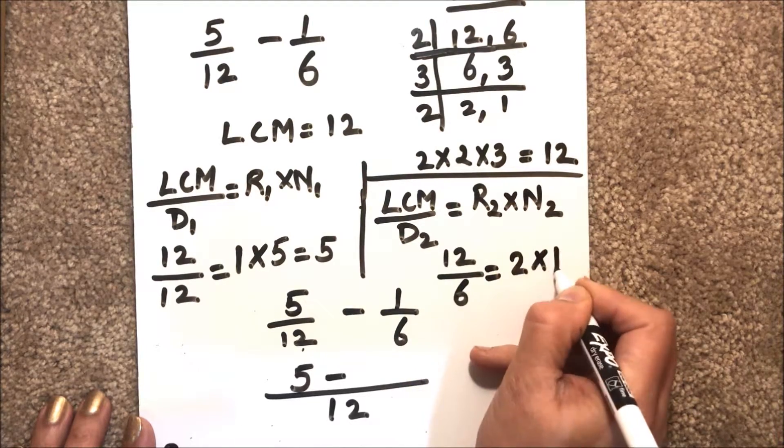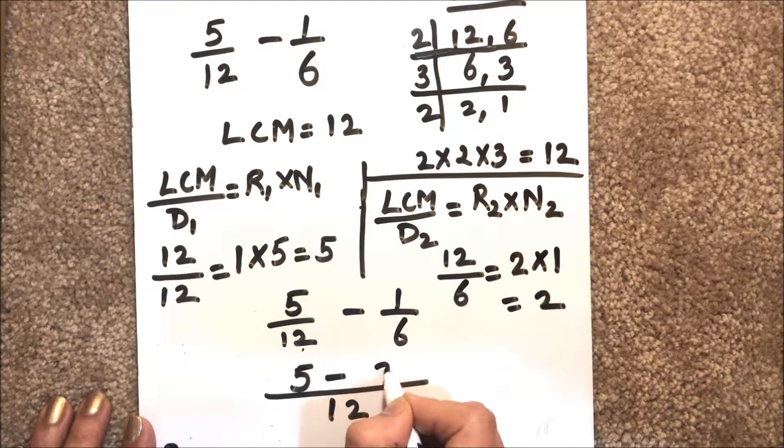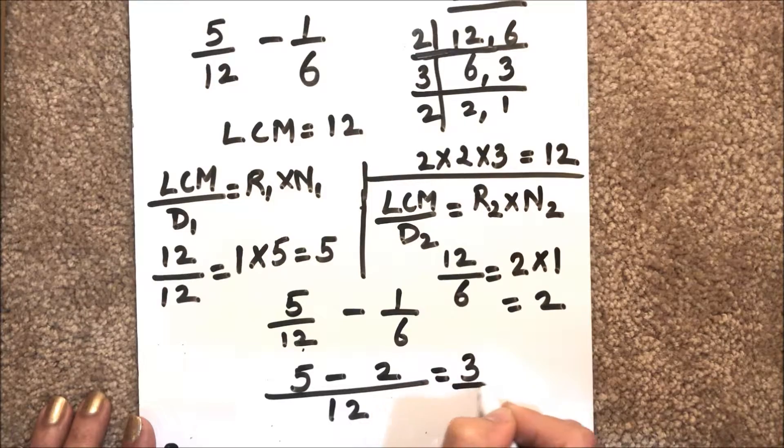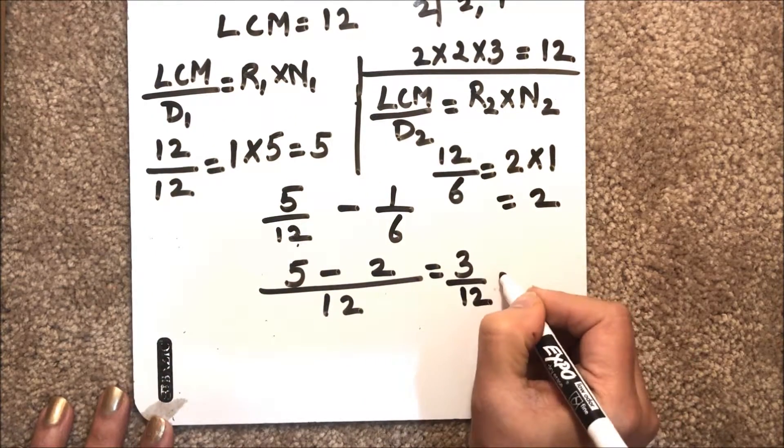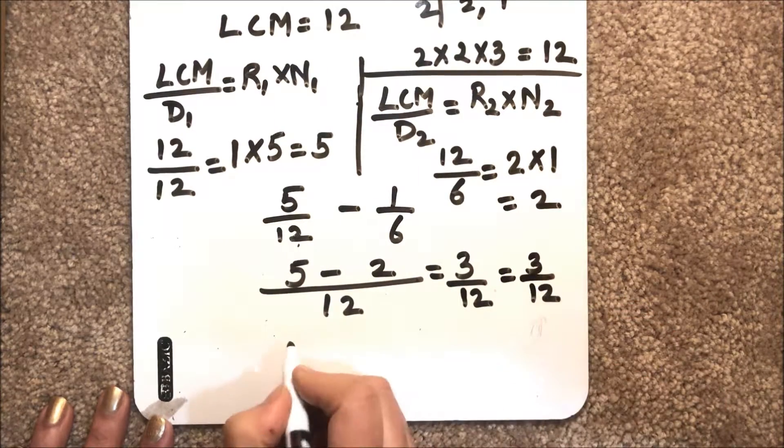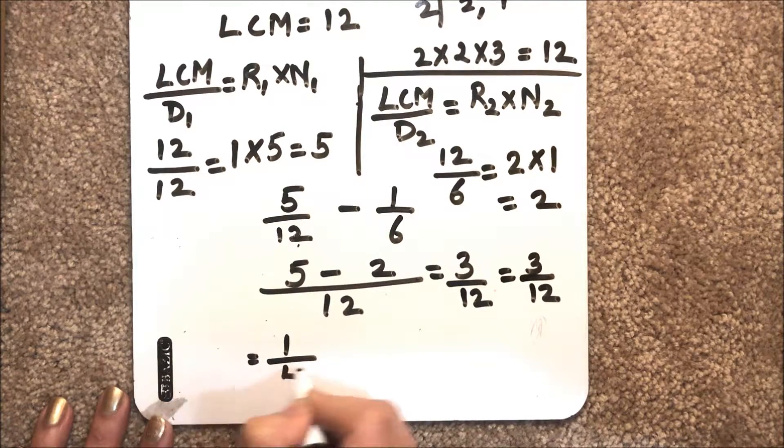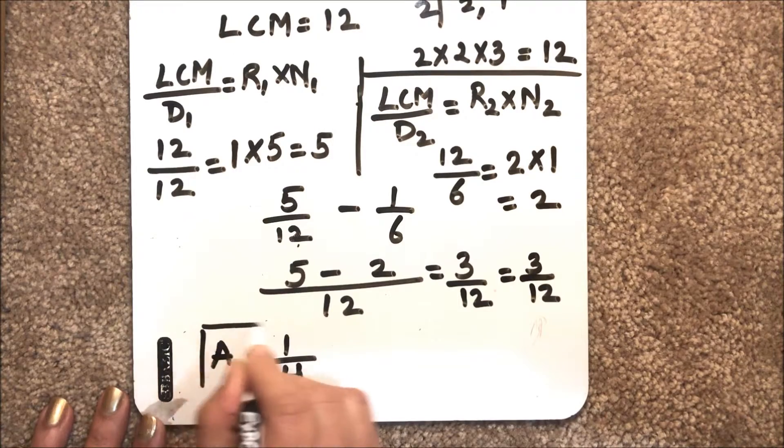So 5 minus 2 is 3, and the denominator is 12, so 3 over 12. Or we can simplify it to 1 over 4. So our answer is 1 over 4.